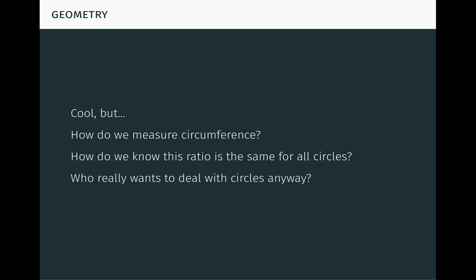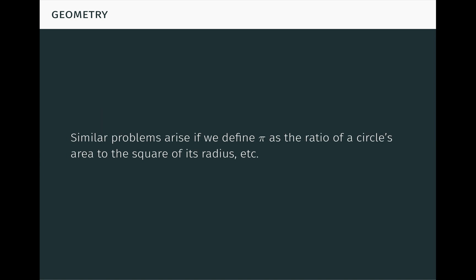Finally, who really wants to deal with circles anyway? I mean, pi pops up all over the place in mathematics, in contexts not necessarily directly tied to circles. So, why do we want to have our definition so intimately tied to the geometry of a circle? Similar problems arise if we try to define pi as the ratio of a circle's area to the square of its radius, which is another definition you might have seen.